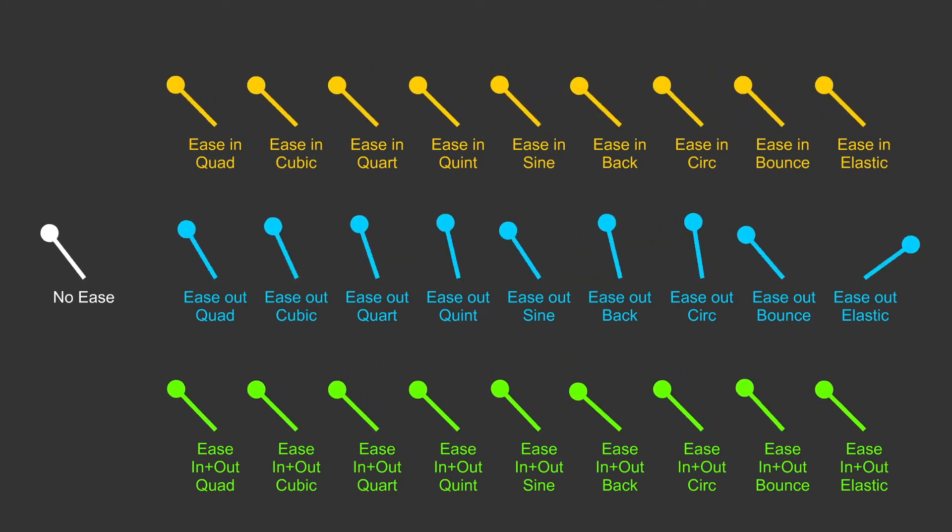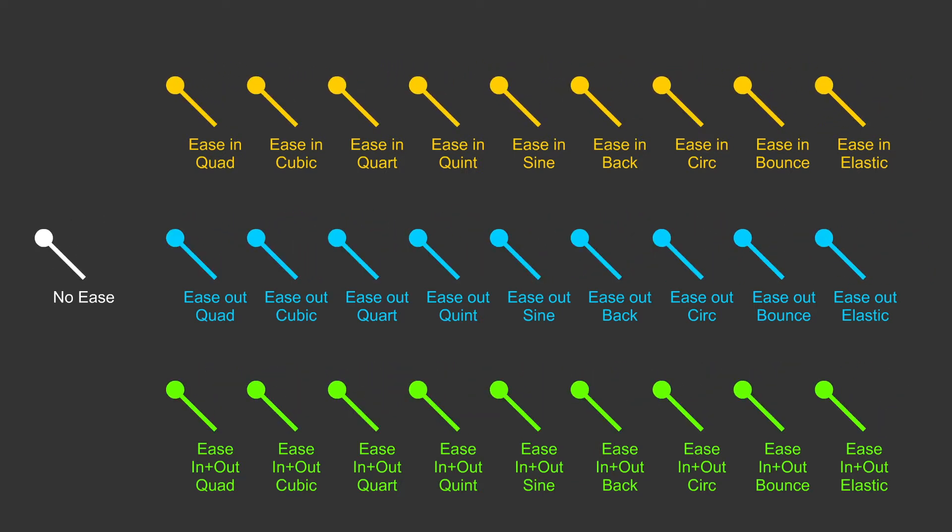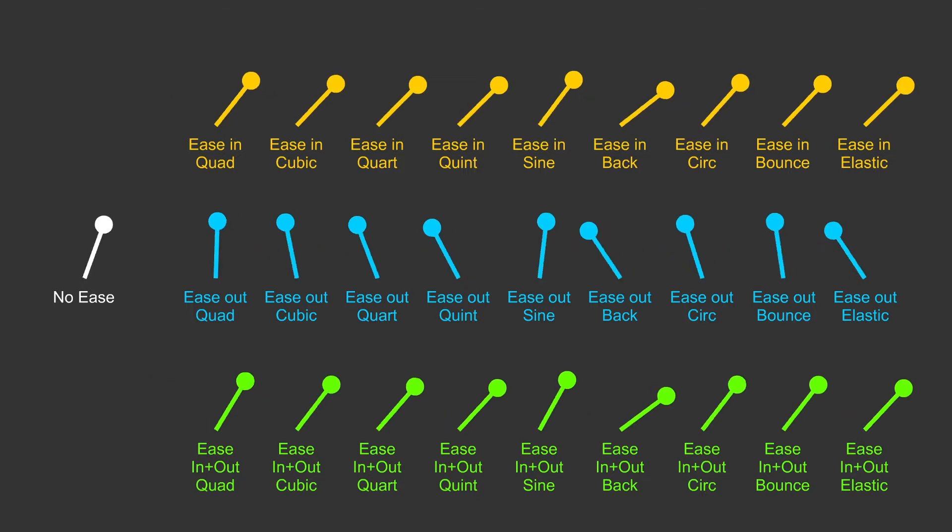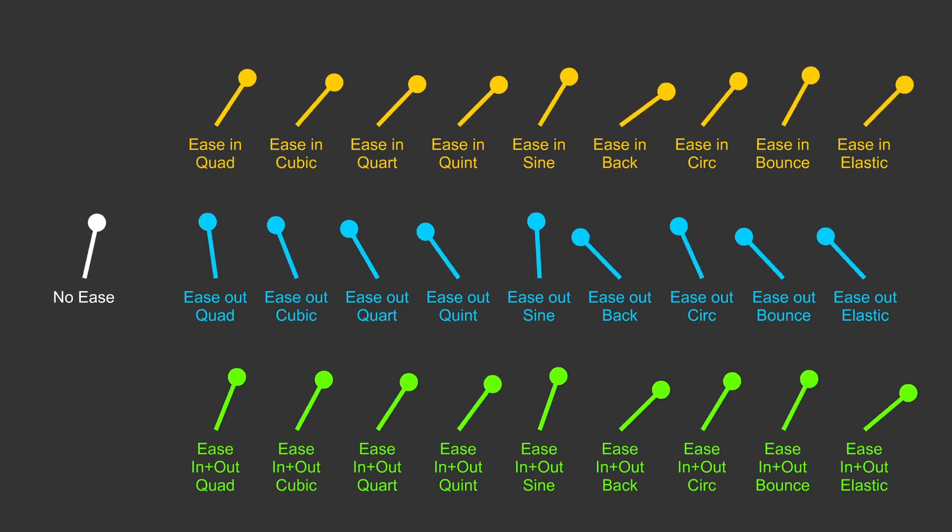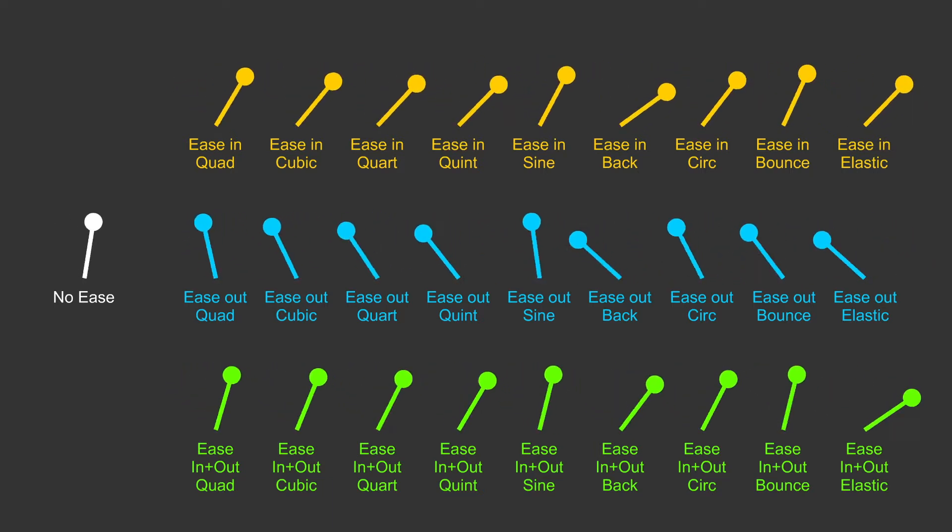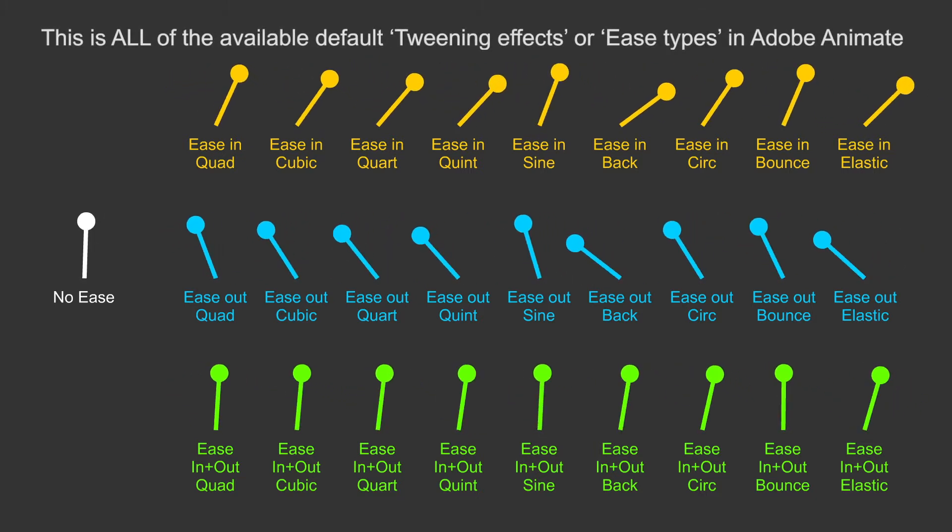So what we're looking at here is a bunch of pendulums flipping backwards and forwards. Really simple. They've all got exactly the same keyframe, one keyframe to the left and one keyframe to the right. They just flip backwards and forwards and the only difference is the tweening effect or the type of easing and easing out that I'm using, and all of these are the defaults.